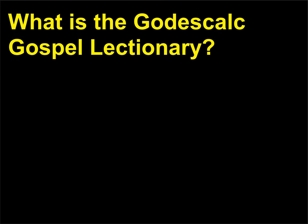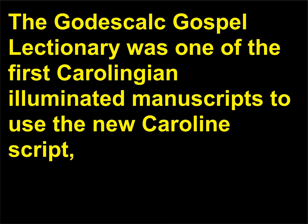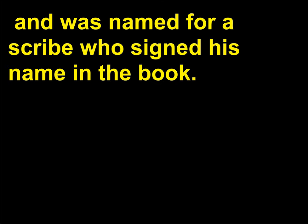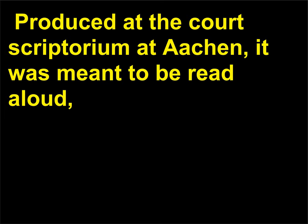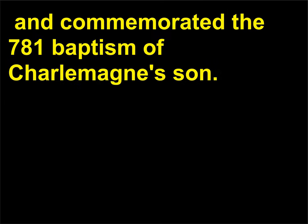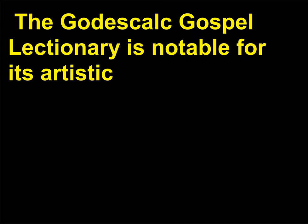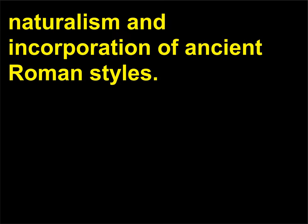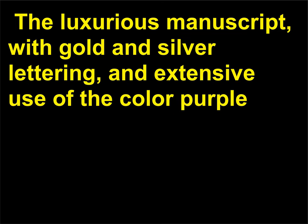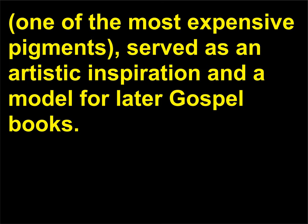What is the Godescalc Gospel Lectionary? The Godescalc Gospel Lectionary was one of the first Carolingian illuminated manuscripts to use the New Caroline script, and was named for a scribe who signed his name in the book. Produced at the court scriptorium at Aachen, it was meant to be read aloud and commemorated the 781 baptism of Charlemagne's son. The Godescalc Gospel Lectionary is notable for its artistic naturalism and incorporation of ancient Roman styles. The luxurious manuscript, with gold and silver lettering and extensive use of the color purple — one of the most expensive pigments — served as an artistic inspiration and a model for later gospel books.